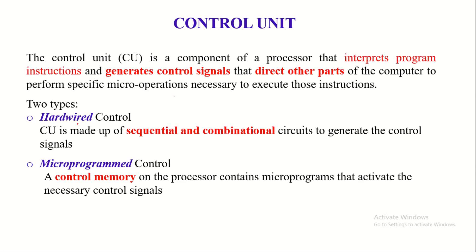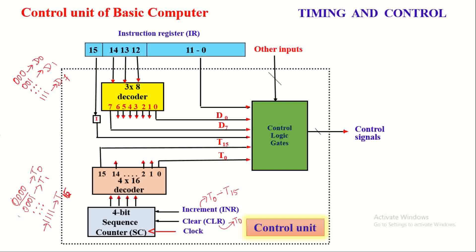In Hardwired Control, the control unit is made up of sequential and combinational logic to generate control signals. In Micro-Programmed Control, a control memory on the processor contains micro-programs that activate the necessary control signals in order to direct other parts of the computer to perform specific micro-operations required to execute instructions read from memory. In this lecture, we are going to discuss in detail about the Hardwired Control Unit.